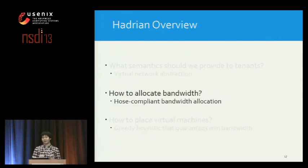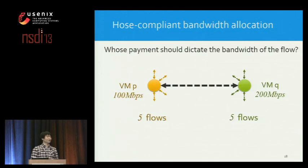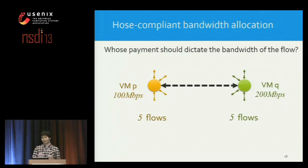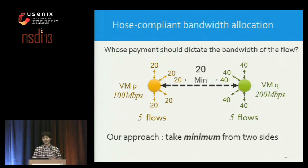So far I've described the virtual network abstraction. Now I'll explain bandwidth allocation strategy in Hadrian. We propose a new scheme called host-compliant bandwidth allocation. Consider two VMs, P and Q, with bandwidth requirements of 100 and 200 Mbps respectively. The question is whose payment should dictate the bandwidth of the flow between them. We assume payment for the network is proportional to bandwidth requirements, and each VM distributes payment uniformly across all flows. In host-compliant bandwidth allocation, we take the minimum from two sides, which is 20 in this case.